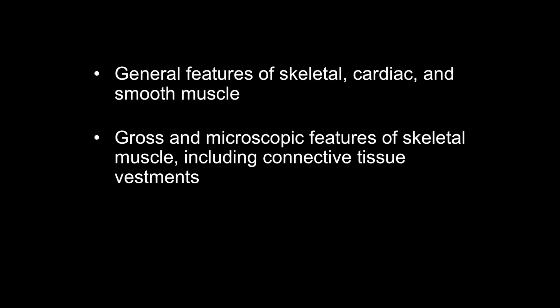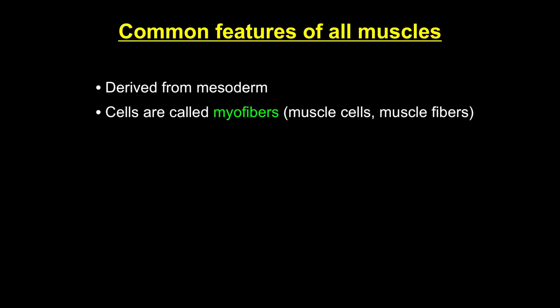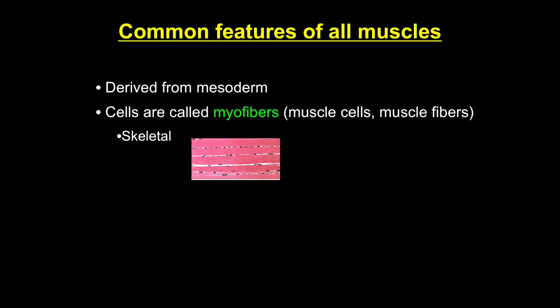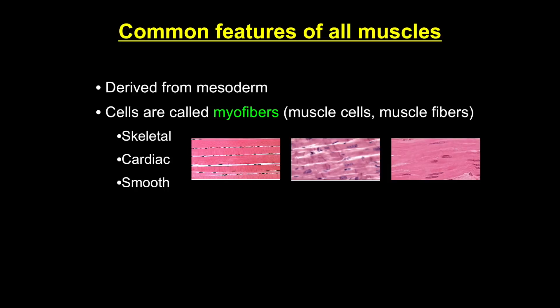Recall from embryology that all muscle cells are derived from mesoderm. These cells are called variously myofibers, muscle cells, or muscle fibers, but they all refer to the single muscle cell. There are three subtypes of muscle tissue: skeletal, cardiac, and smooth muscle.